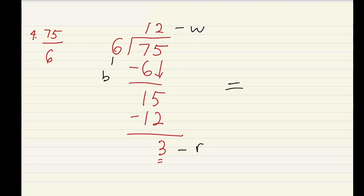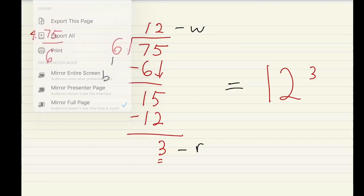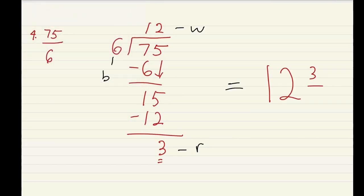So your answer becomes 12 from the whole number, followed by 3 from the remainder here, and we have 6 from the bottom number which is this. You can leave your answer as this if you do not find this in the options that you're given.